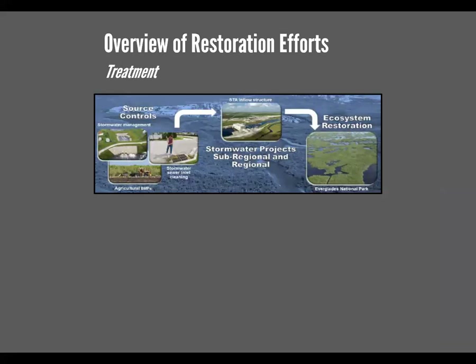Along with all the storage, you also have treatment. Treatment is a broad term with a lot of components. The first and easiest component is source control — something we can get to very quickly that we focused on early on in the restoration project. This includes stormwater management, stormwater ponds in communities, stormwater inlet cleaning, agricultural best management practices, and other small things that contribute largely to clean the water. The other component is stormwater treatment areas at both the regional and sub-regional scale.